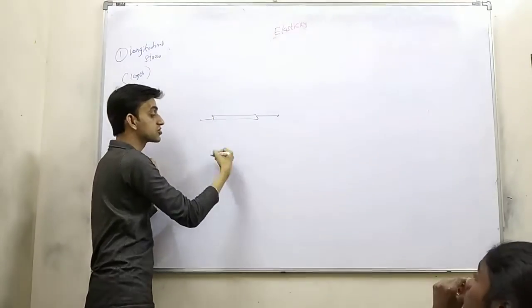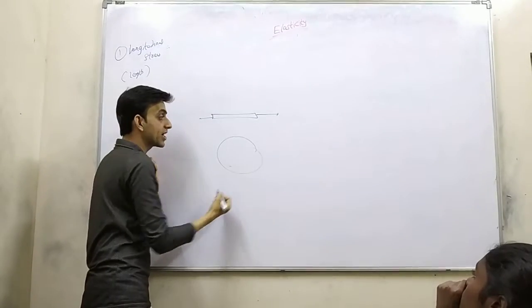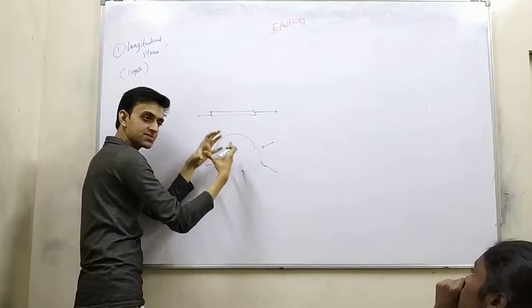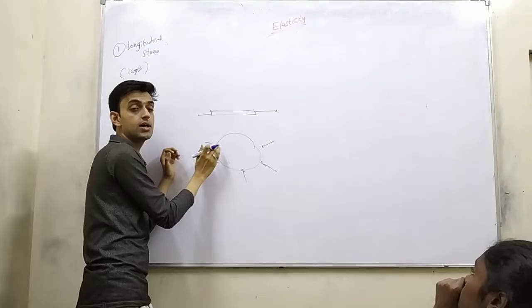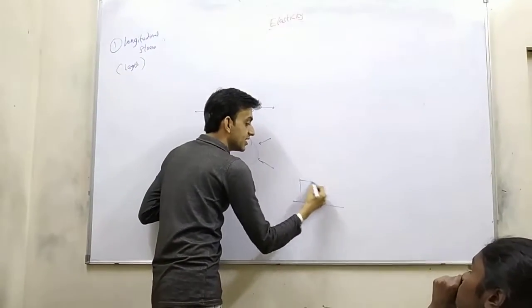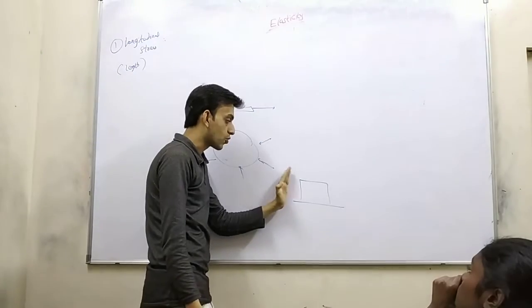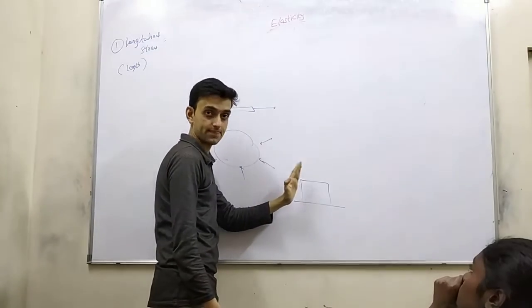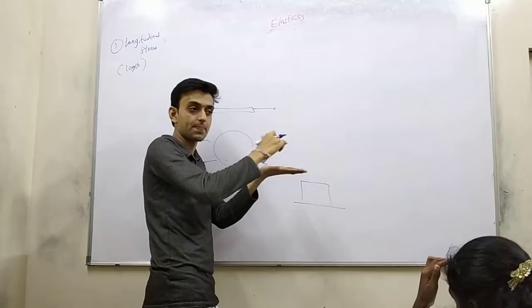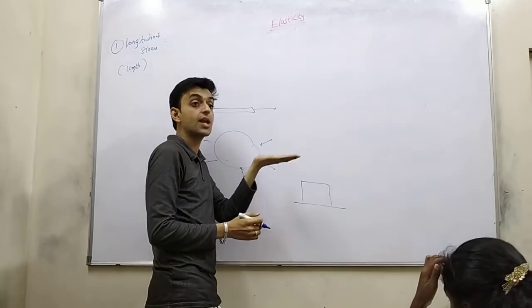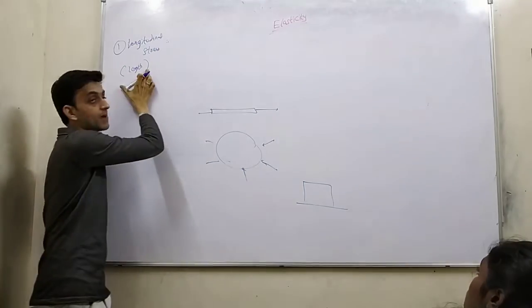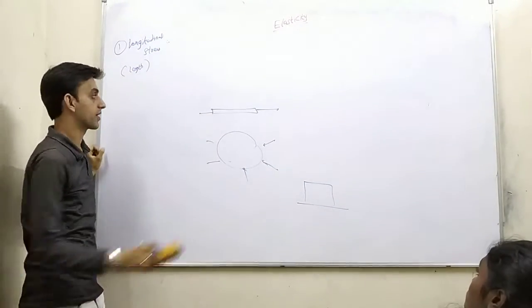The other one is volume stress. When you press the balloon from here, the volume changes. The third one is shearing stress related to shape. For example, the jelly. When force is applied, it is moving and the shape changes.